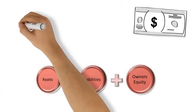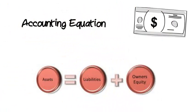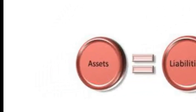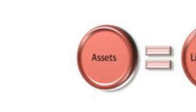Today's session is going to be about the accounting equation. So far you would have learned what an asset is — something that a business owns like cash, furniture, accounts receivable, buildings and so forth.